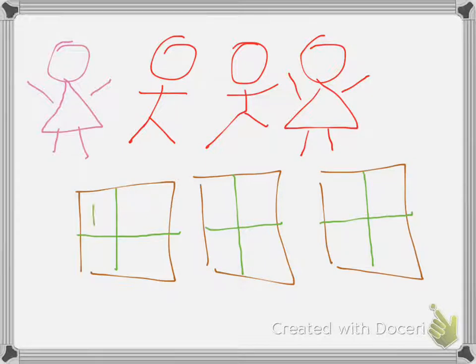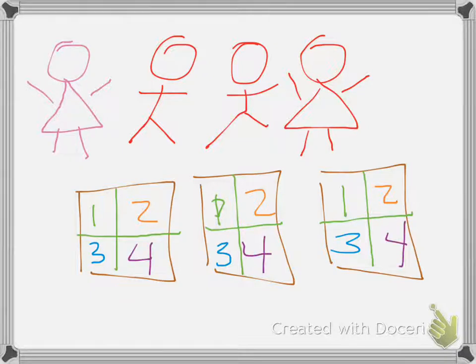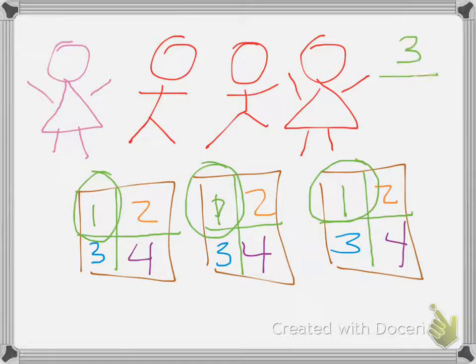So here are my sandwiches into fourths. So then I'm going to go through and label them 1, 2, 3, 4 for each sandwich. If I'm Julia, how many pieces do I get? 1, 2, 3. I get 3 out of how many total slices? 4.